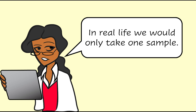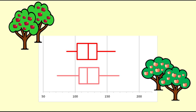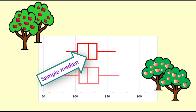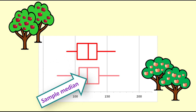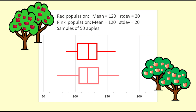Note also that we would only ever take one sample for each variety of apple and we would not know the values from the population. When we look at these two box plots comparing a sample of 50 red apples and 50 pink apples, we can see that there is very little difference in the medians. This is not surprising as in this case the two populations have the same distribution. Even the box widths for the samples are about the same.